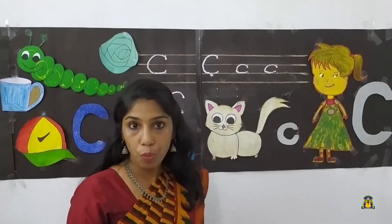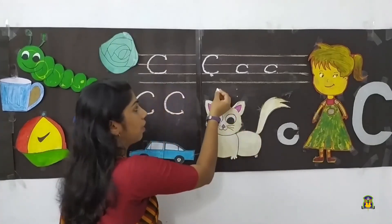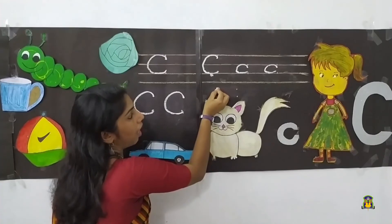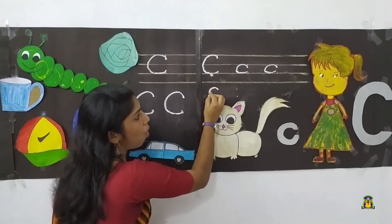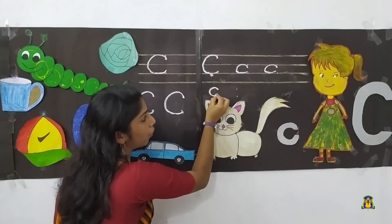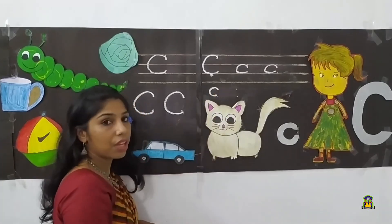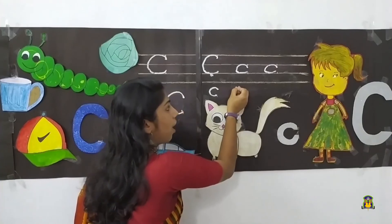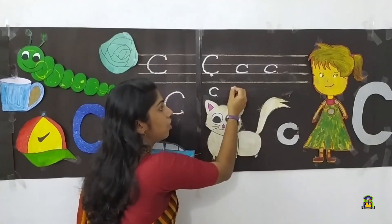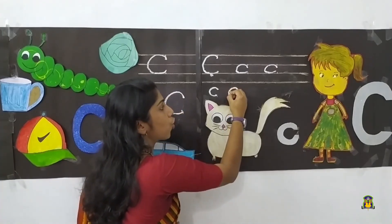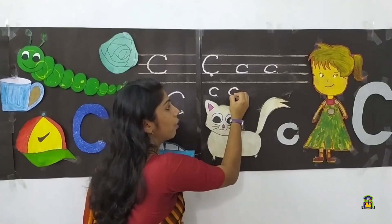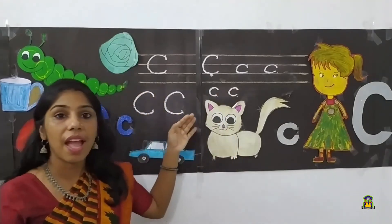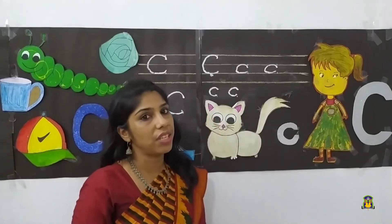Next, ma'am will teach you how to write small c. Put a dot and make a right open curve. Go up a bit. Capital C and small c.